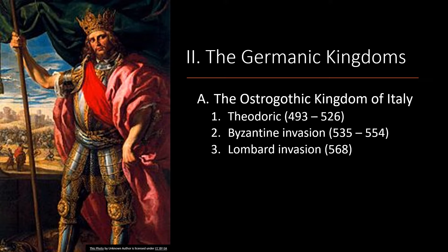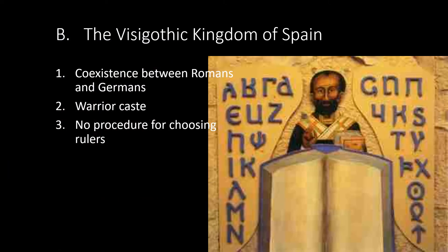Emperor Justinian conquered Italy, destroying Rome and much of the Italian peninsula. The Lombards conquered northern and central Italy and proved to be very harsh rulers. The Visigothic kingdom of Spain: they gave up their Arianism in favor of Catholic Christianity, laws preventing intermarriage were dropped, and a body of common law began to be developed. However, there was no procedure for choosing rulers and assassination remained a way of life. The Church tried to intervene at the Council of Toledo in 633 but it failed. The kingdom was finally destroyed in 711 by Muslim Moors.